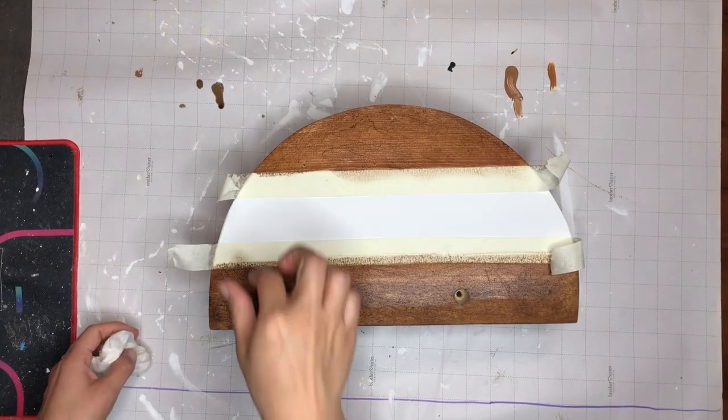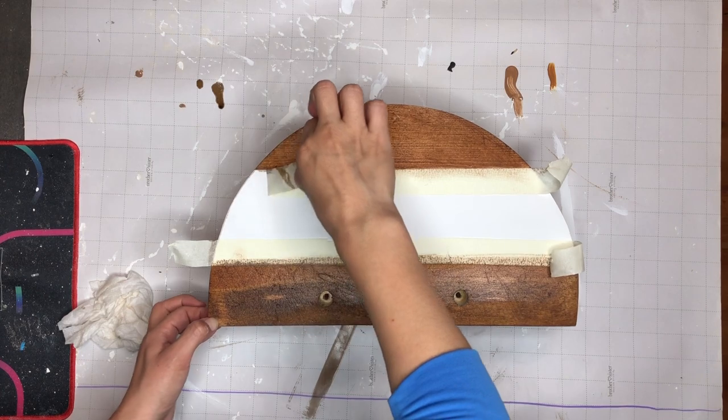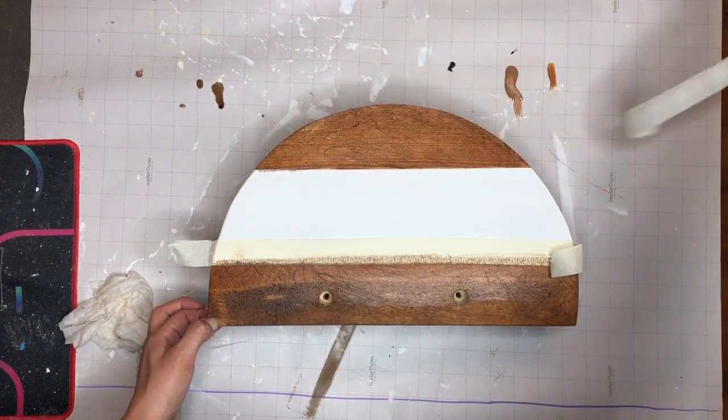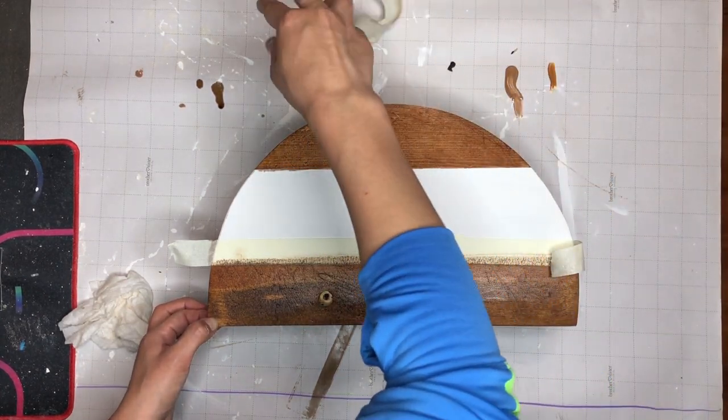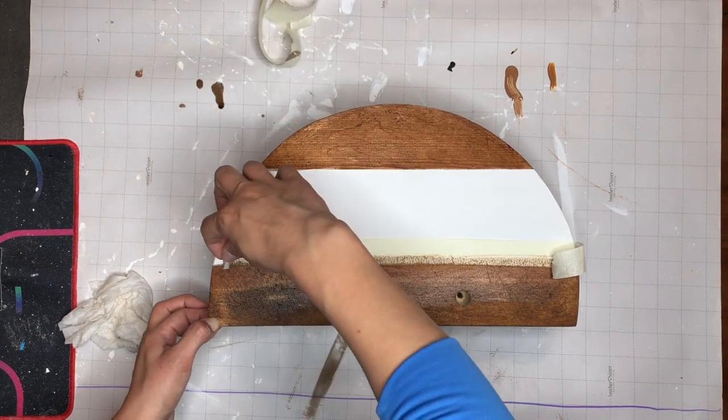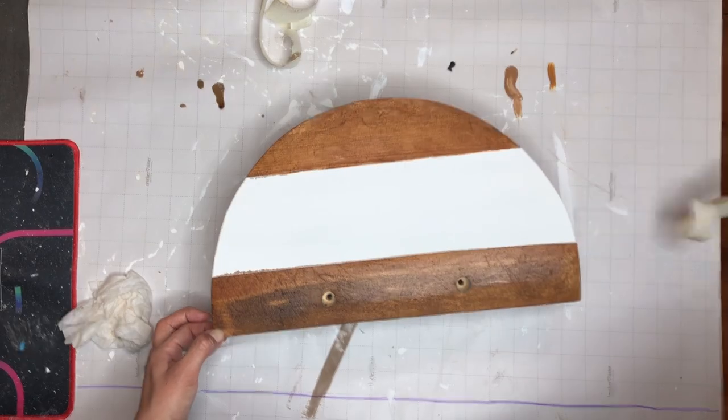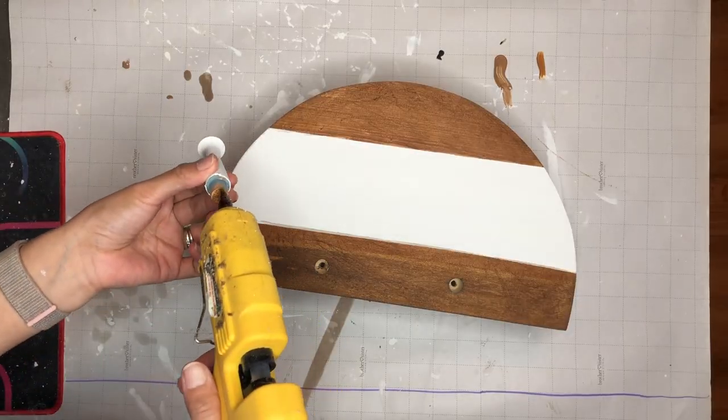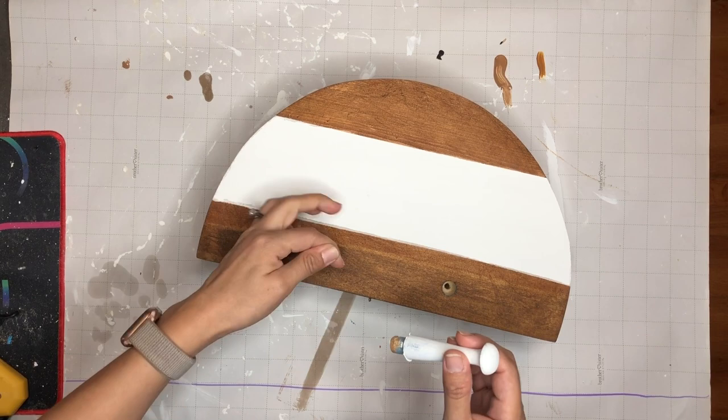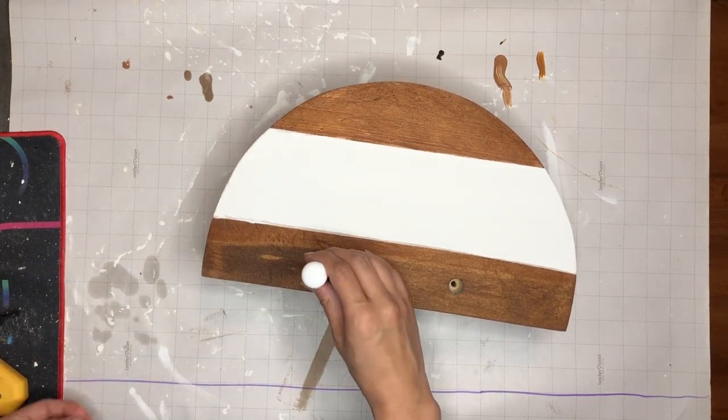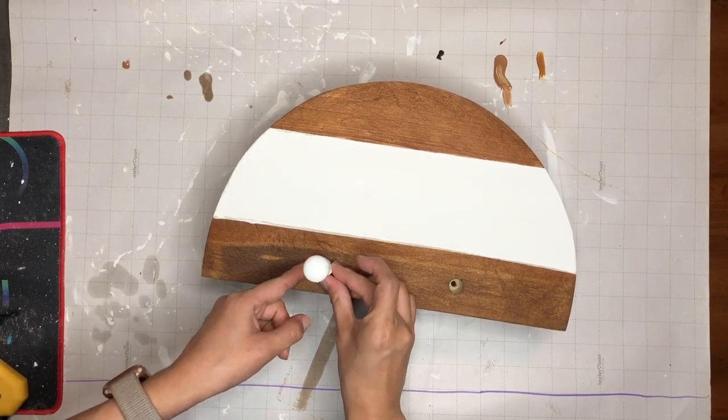Once I was done staining it, I removed the masking tape and I found that a little bit of the stain got onto the white paint. I tried to fix it by doing a couple of layers of white paint on top of that, but the stain is oily, I'm sorry, and it just kept showing up. So I just decided to just leave it alone. Okay, now moving on. I am going to glue down my hooks onto my wooden piece.